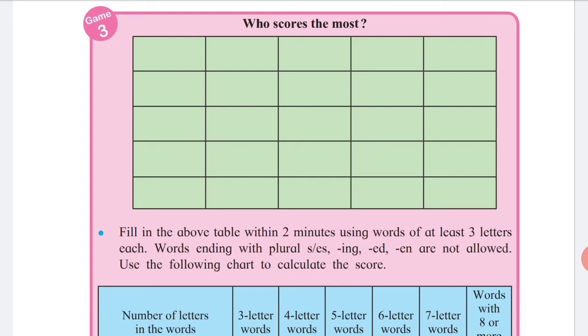Fill in the above table within two minutes using words of at least three letters each. Words ending with plural -s, -es, -ing, -ed, -en are not allowed. Use the following chart to calculate the score.